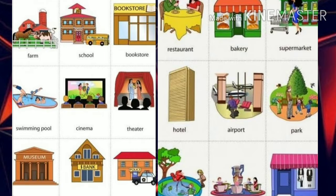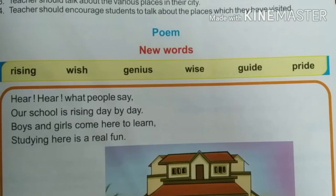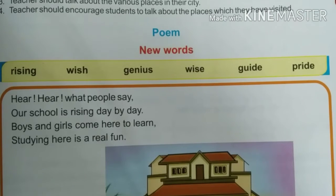The city brings a sense of pride. The city can bring a chance of pride in us. We also have historical monuments in our city. In this poem, we are going to learn about city's pride, which is a school. It is a good school in the city, and because of the school, the city's name is famous.